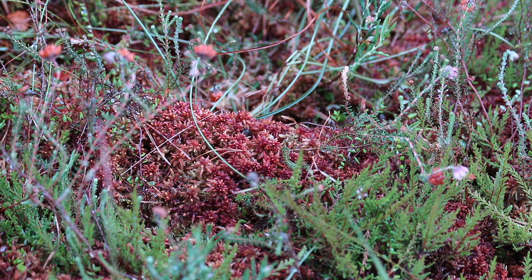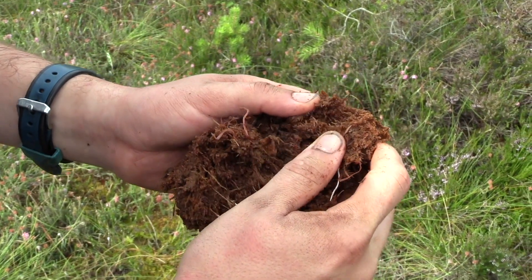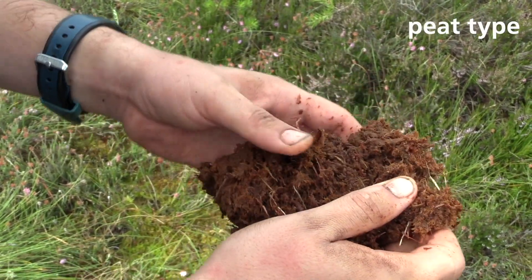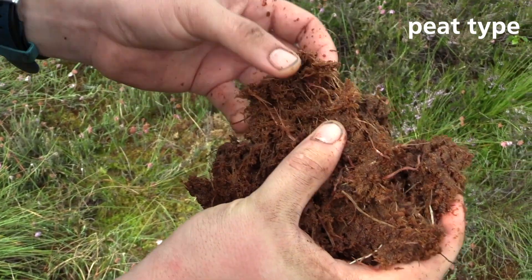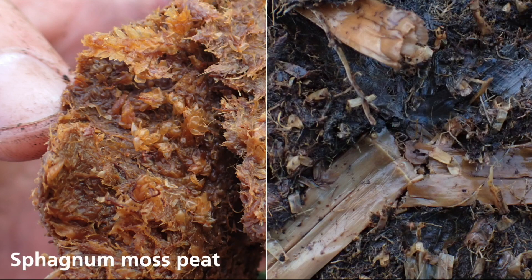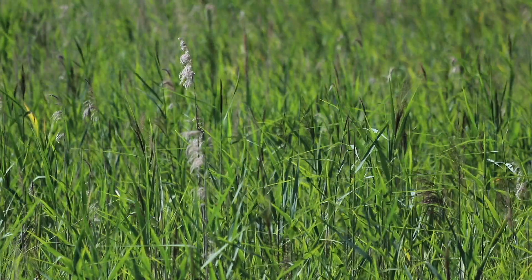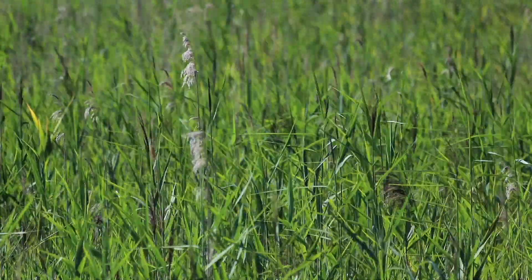Over time, peat with different characteristics can be deposited in a peat-accumulating mire. These deposits are the parent material of the forming soil. Their most important attribute is the peat type — the specific plants the peat was produced by. There are many peat types, such as sphagnum moss or reed peat, among many others. In different phases of peat accumulation, different peat types can be deposited depending on abiotic factors.